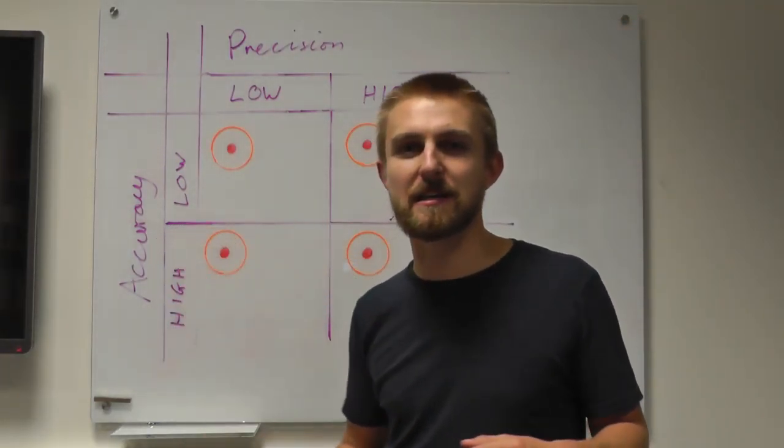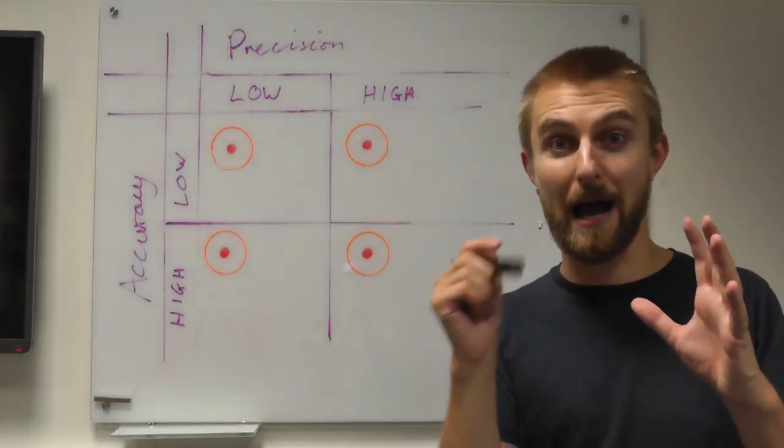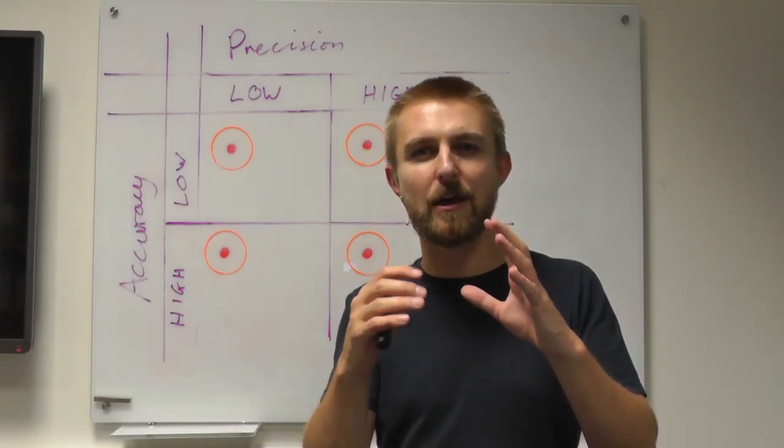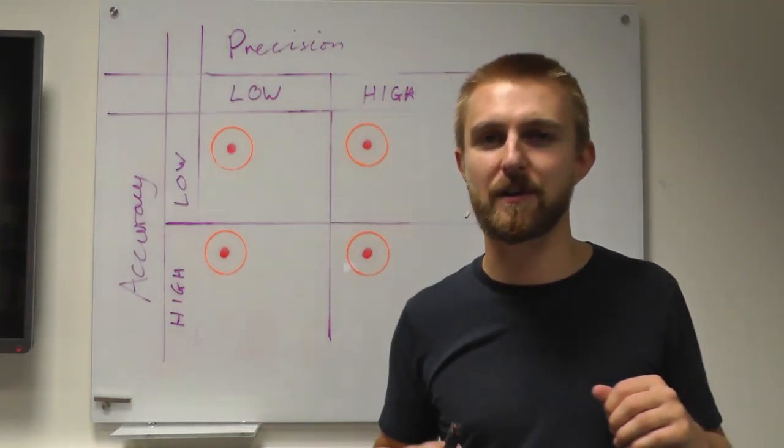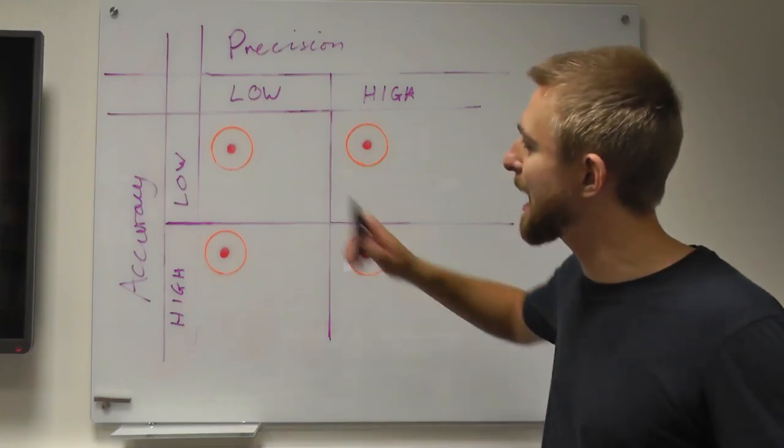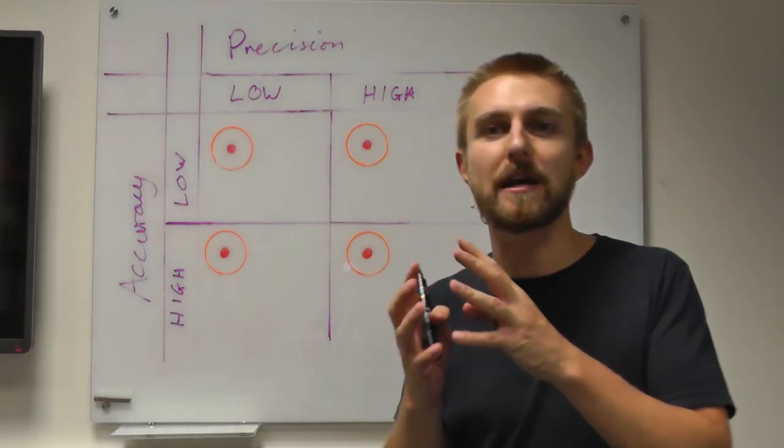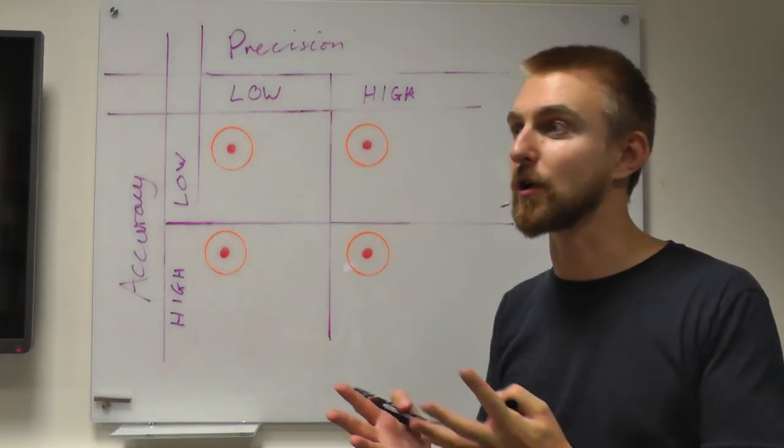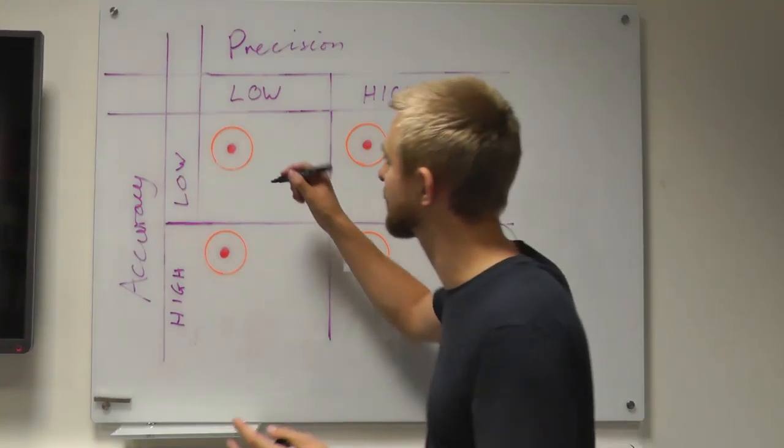But it doesn't mean that they're close to the bullseye. Whereas accuracy says, let's have a look at all of your shots, and are they on average pointing at the target? So if you've got low precision and low accuracy, not only are the points spread out, they also aren't clustered around the target.